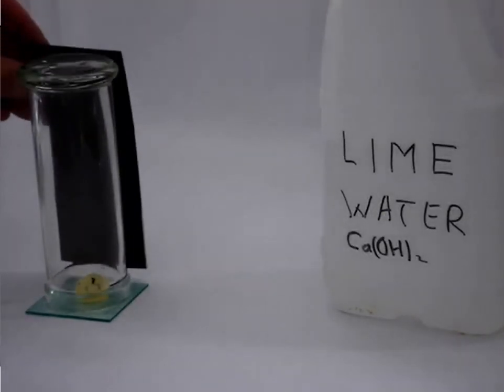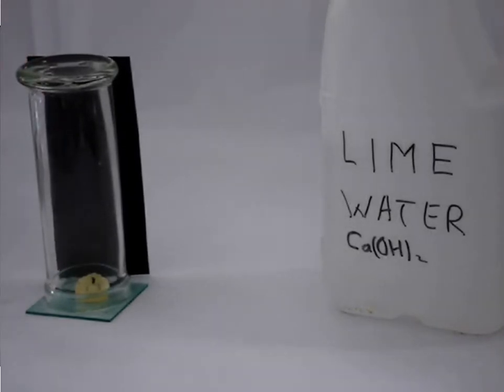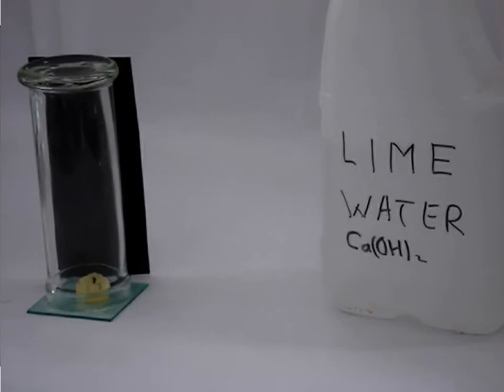Now, the immediate form of the product was vapor, water vapor. But as that water vapor rose and went against the cooler sides of the gas jar, it condensed into water liquid. And that's what we see on the sides, making it cloudy. And that's how we can know that one of the products of combustion of an alkane is water.